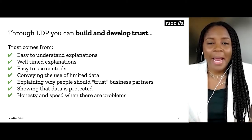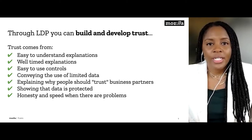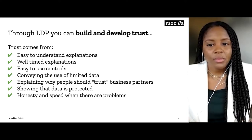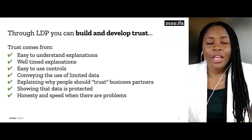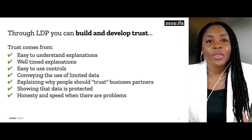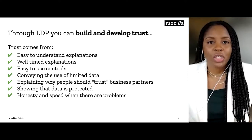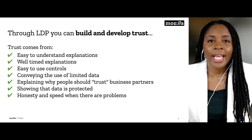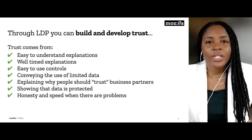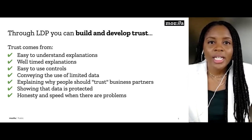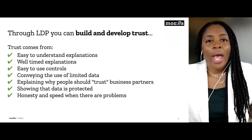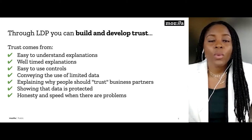Trust comes from transparency and being open with your users around how their data is being used, and from minimizing the data you are using. If you have business partners that you trust with the user's data, you want to be transparent and build trust with your customers by explaining why they should trust those partners too, and that you've done your due diligence. Trust also comes from helping your customers understand their data is protected, and from resolving any issues swiftly and honestly.